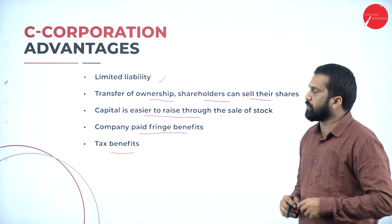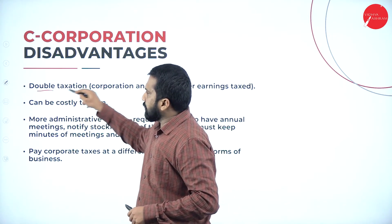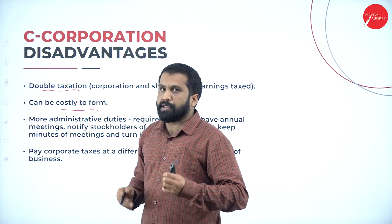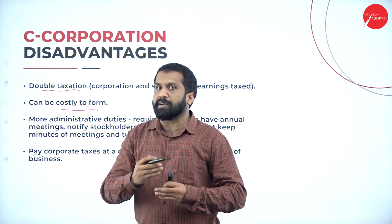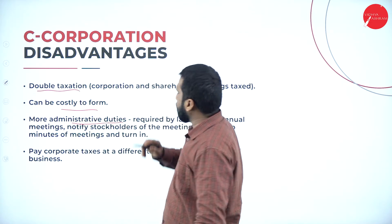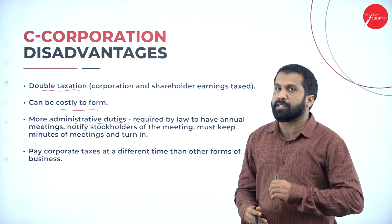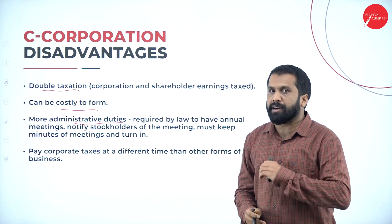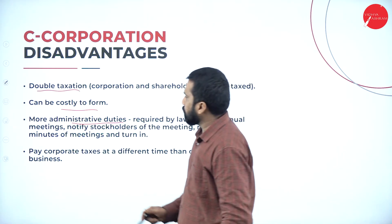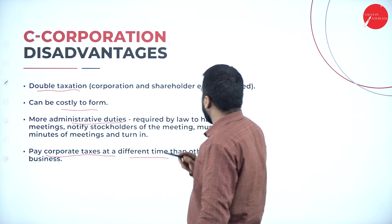Disadvantages of C corporation: there is multiple taxation — double taxation. Costly to form, and the documentation will be expensive. More administrative duties — you need to prepare and maintain too many records. Pay corporate taxes at different times. These are the disadvantages of C corporation.